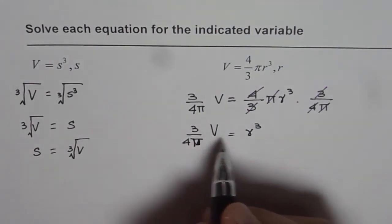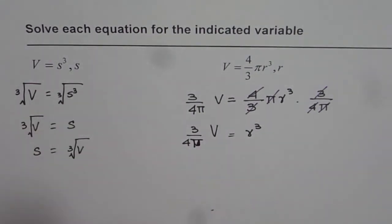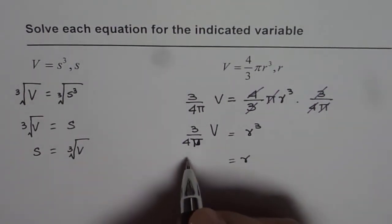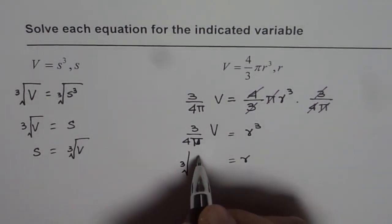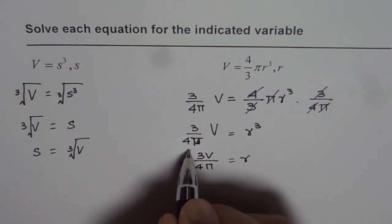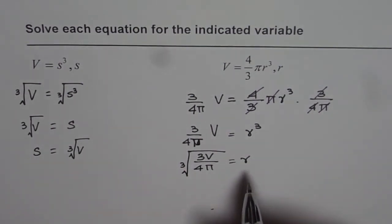From here we can do cube root on both sides, just as we did before. We will get R on the left side and we will get the cube root of 3 times volume divided by 4 times π on the right. That is how we can isolate for the radius R of the sphere.